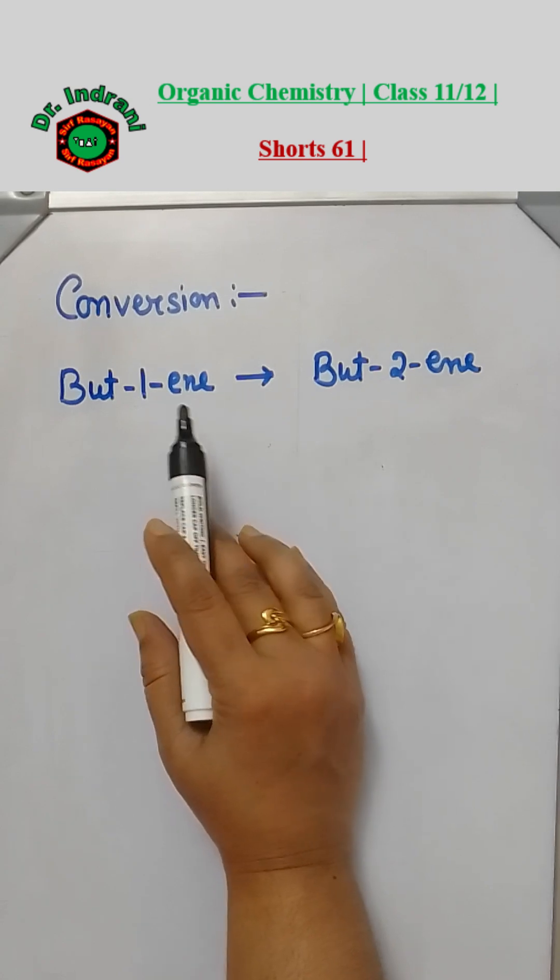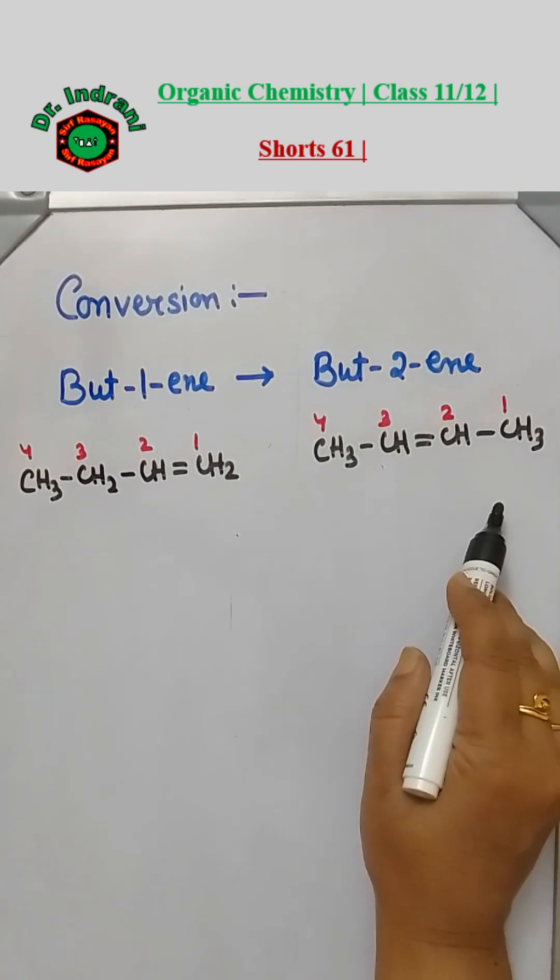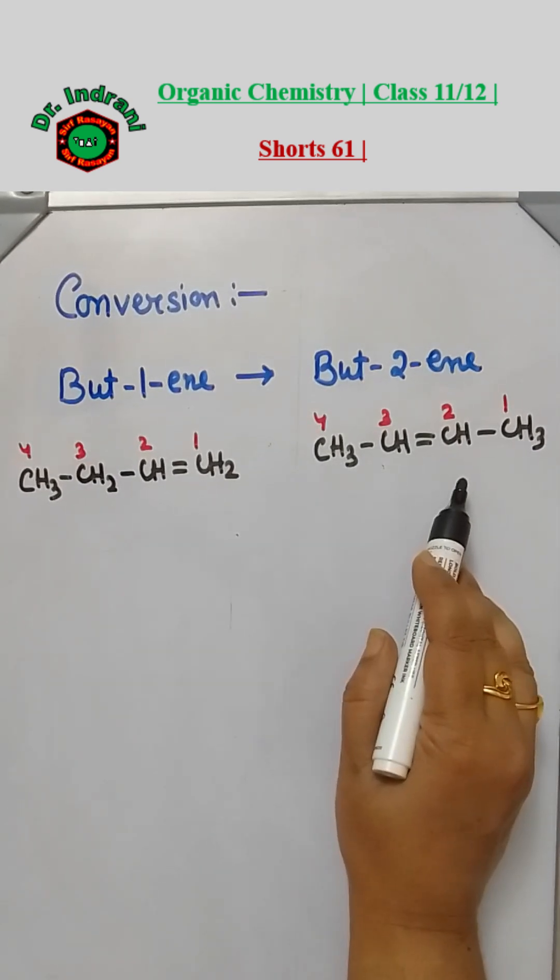How will you do the following conversion: but-1-ene to but-2-ene? This is but-1-ene, this is but-2-ene. These two are position isomers.